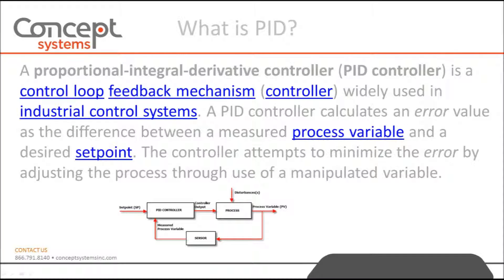What is PID? A PID controller is a control loop feedback mechanism widely used in industrial control systems. A PID controller calculates an error value as the difference between a measured process variable and a desired set point. The controller attempts to minimize the error by adjusting the process through use of a manipulated variable.